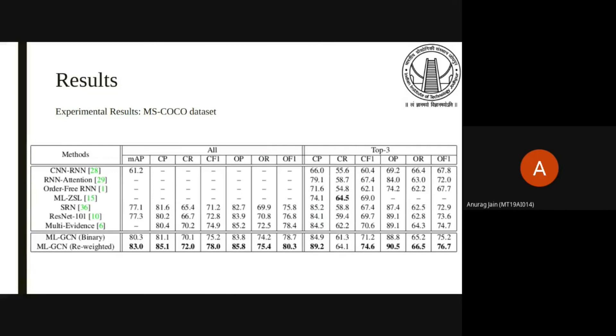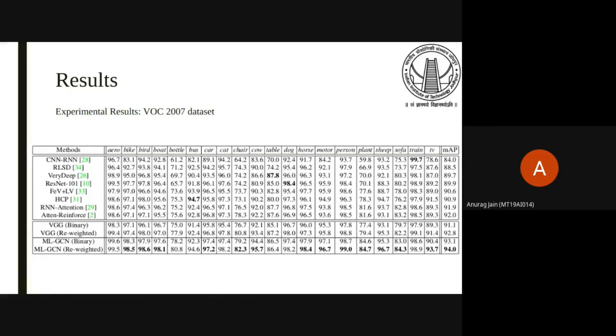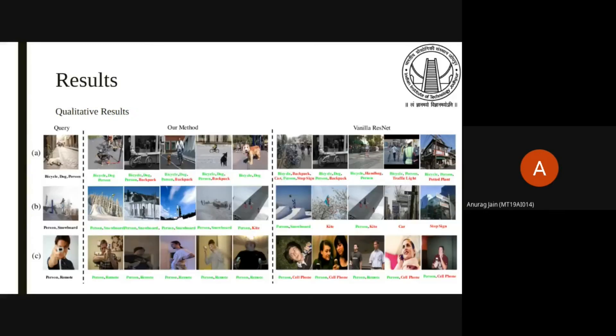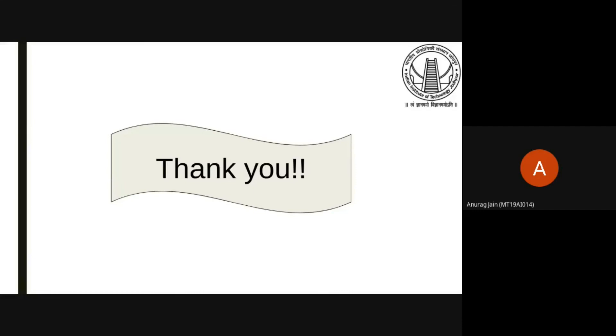This table shows the MLGCN result on the MS-COCO dataset which has a MAP of 83, which is better than previous state-of-the-art results. On Pascal VOC dataset also, MLGCN outperformed state-of-the-art results by 2% which has a MAP of 94. Some of the qualitative results are presented here to show the effectiveness of the MLGCN work. Thank you.